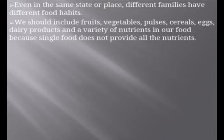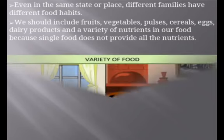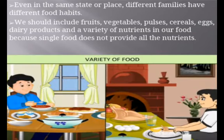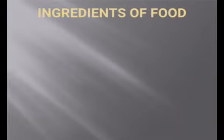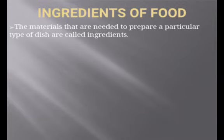We should include fruits, vegetables, pulses, cereals, eggs, dairy products, and a variety of nutrients in our food, because a single food does not provide all the nutrients. So take care that whenever you take your meal, different types of nutrients should be present so that you can get a balanced diet. Now we will take our next topic: Ingredients of Food.